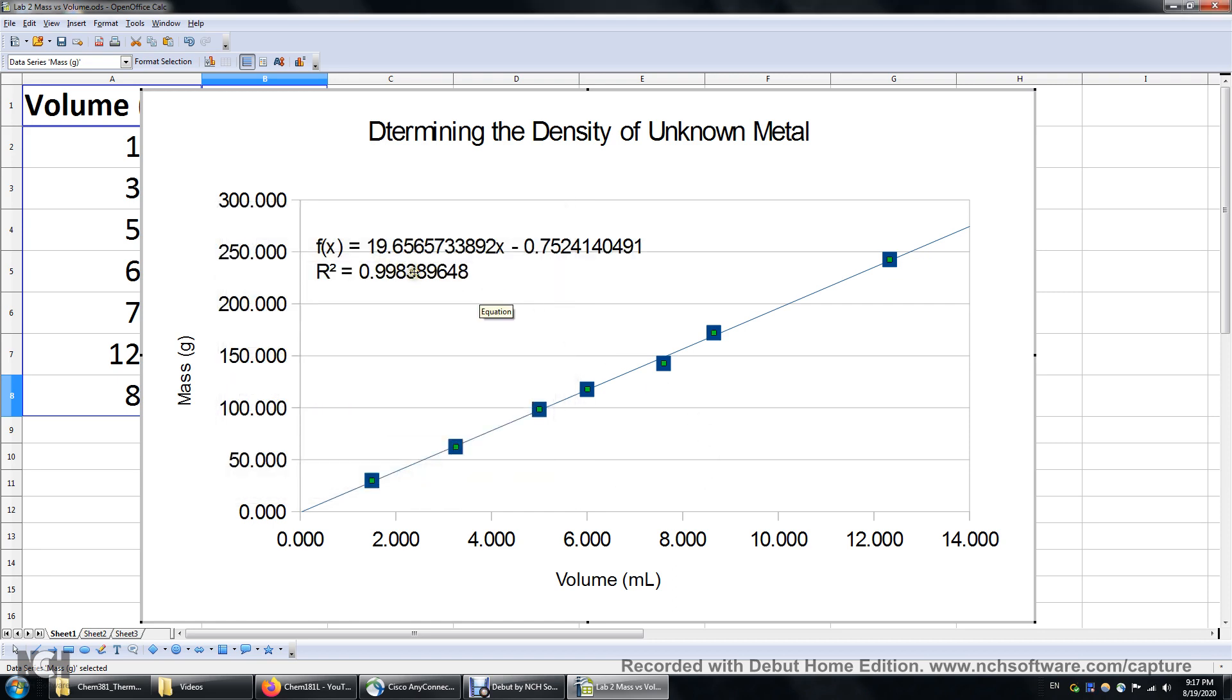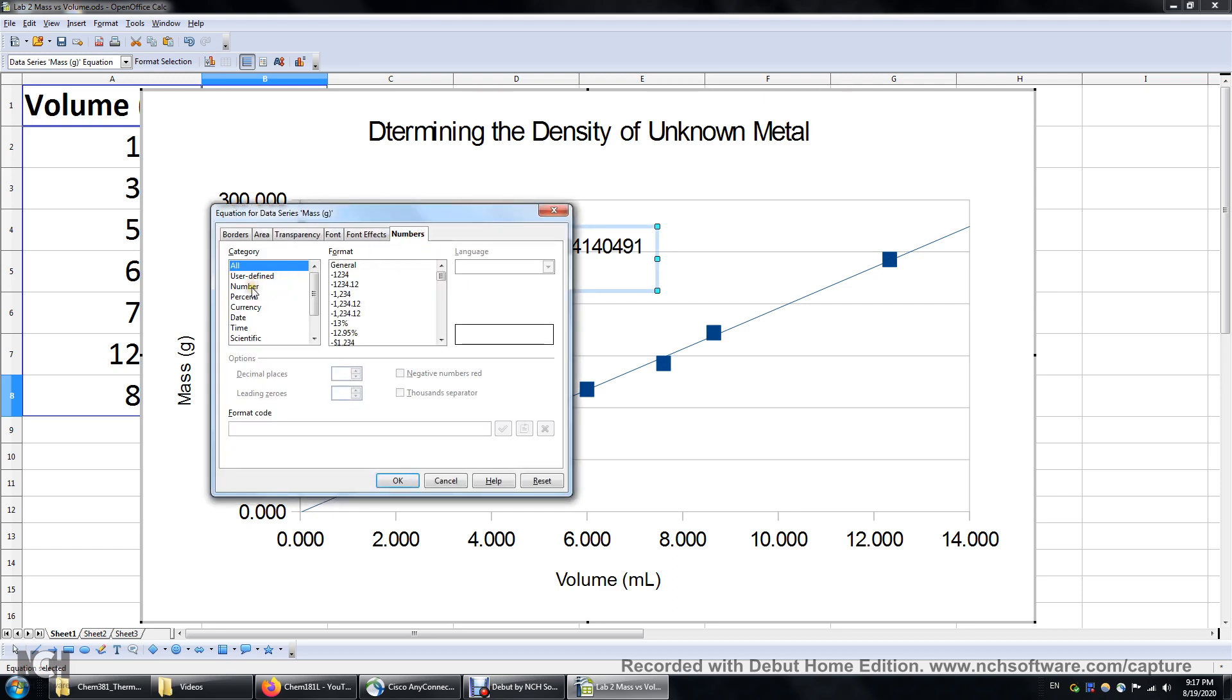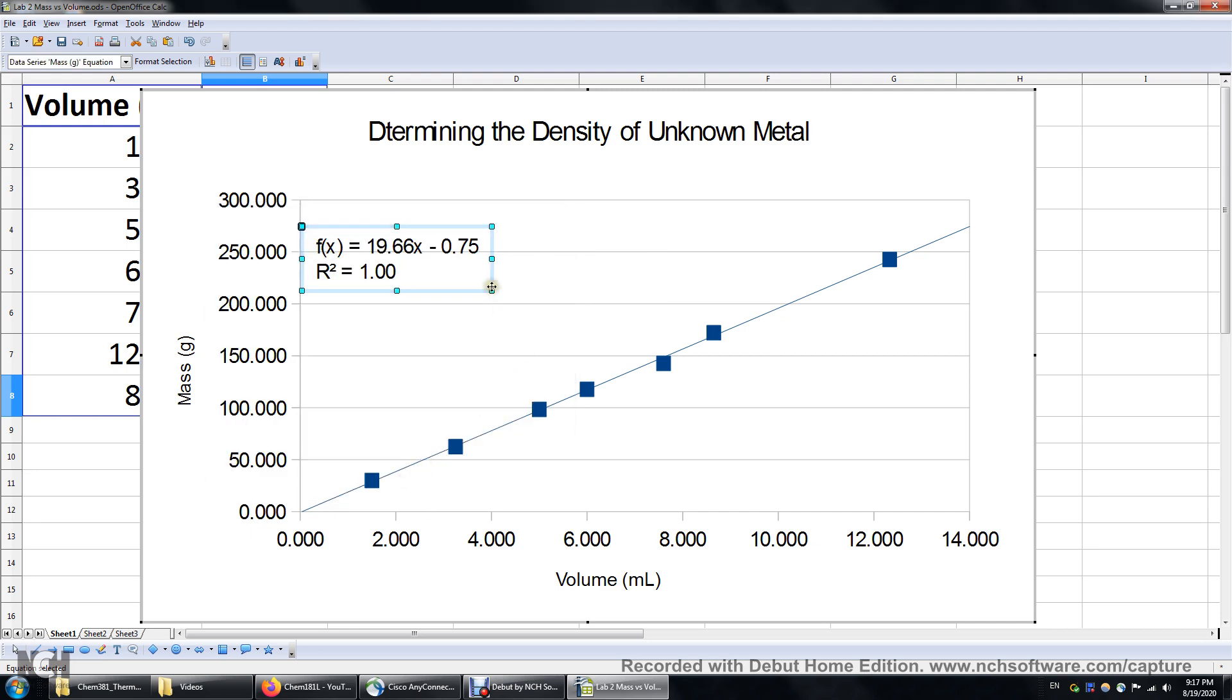We have the equation here. We have the r squared value here, but we are looking at too many sig figures. If you look at the volume, some of them have only three sig figures. So I just right clicked this equation, click format, click numbers over here, choose number, and then maybe at most two decimal places. So now this is more reasonable. If you are presenting 12 sig figures, that will give the reader a wrong impression about the precision of your research data.